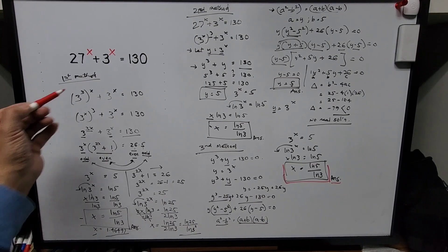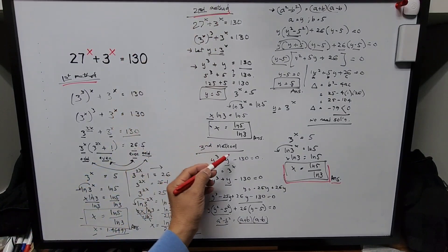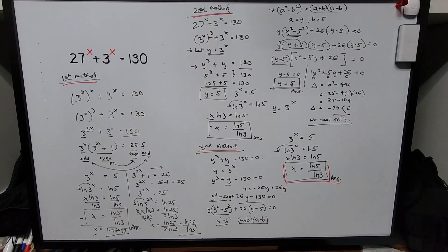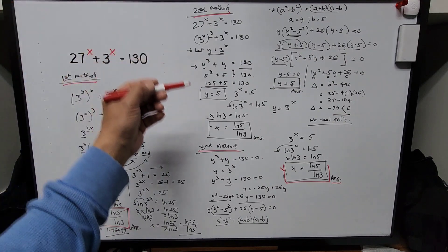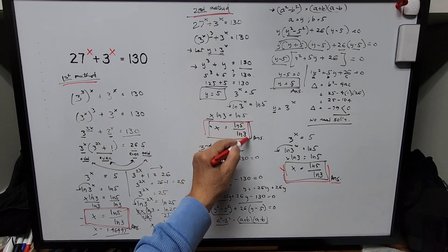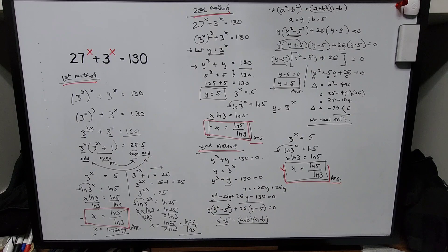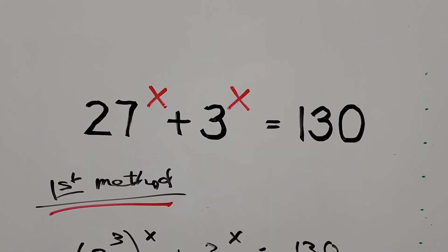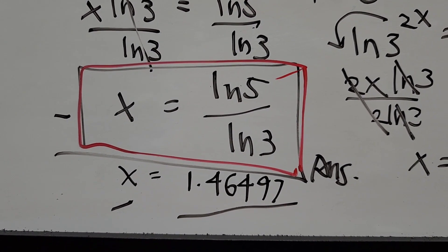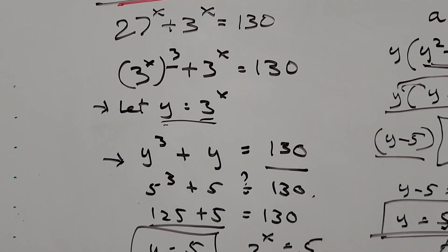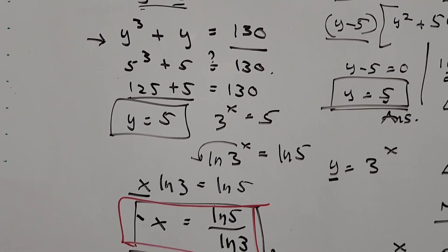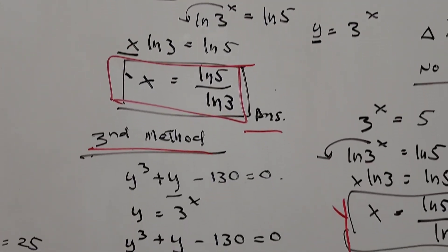So if you notice, on all three methods — first, second, and third — we arrive at the same answer: ln of 5 divided by ln of 3, which is approximately 1.46497. That's all for now. For those new to my channel, I would appreciate it if you could hit the like button and subscribe for more exciting and informative videos. Thank you very much for watching. I will see you on the next video. Have a great day everyone.